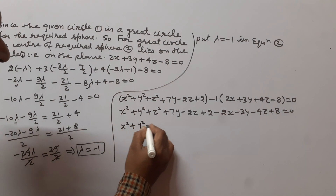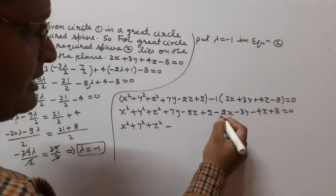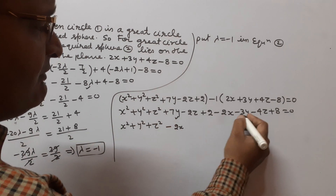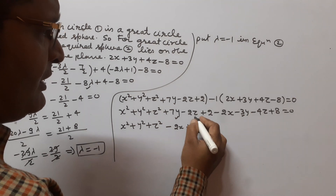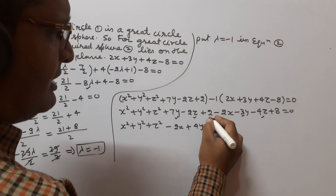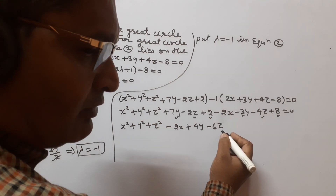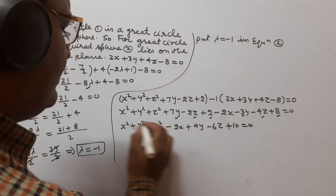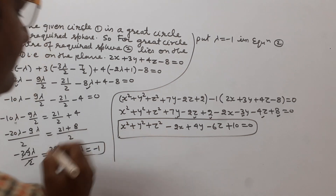Simplifying: x² + y² + z² - 2x + (7y - 3y) + (-2z - 4z) + (2 + 8) = 0, which gives x² + y² + z² - 2x + 4y - 6z + 10 = 0. This is the required equation of the sphere.